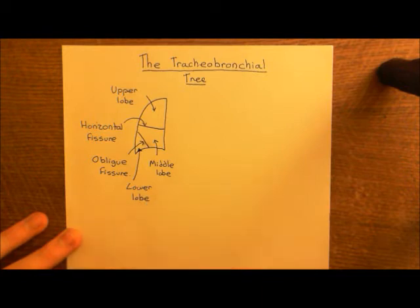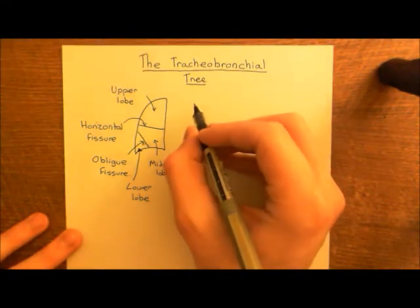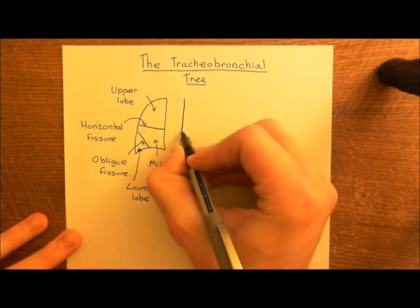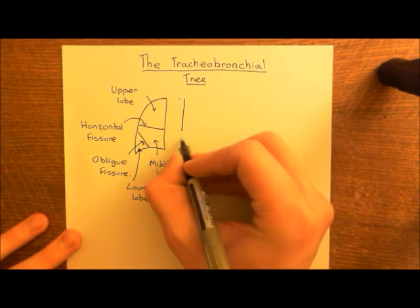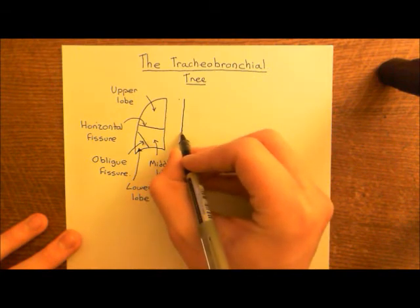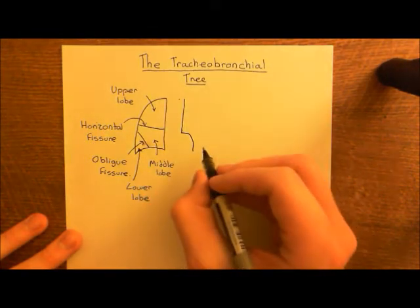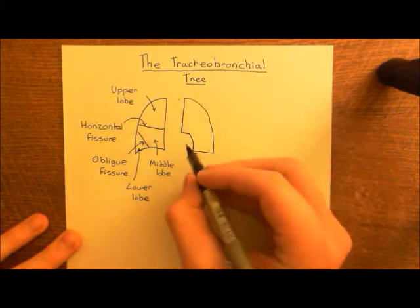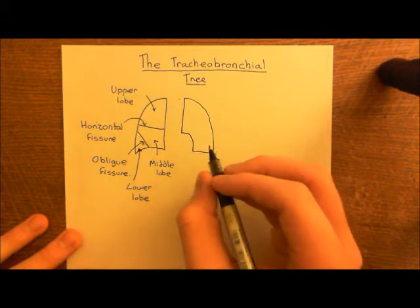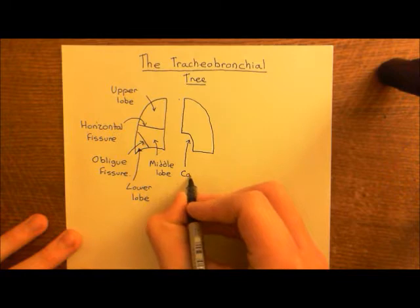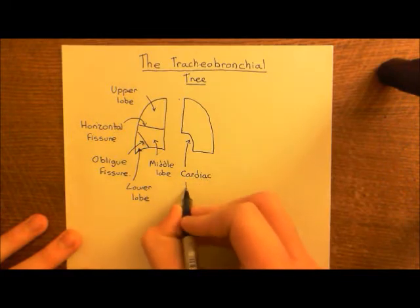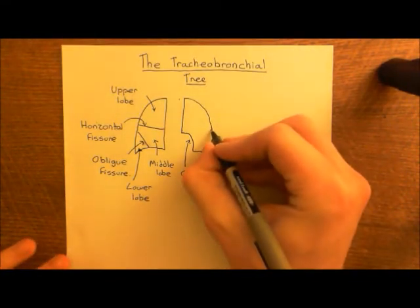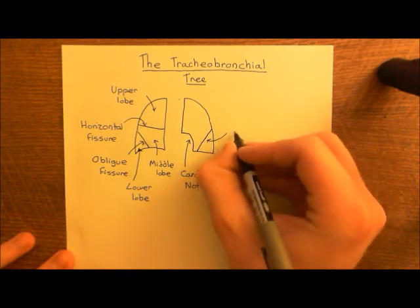Now we've done the right lung, let's move on to the left lung. The left lung is slightly different shaped from the right lung - it's got a notch basically where the heart is going to be. The lung has to come out a little bit to make space for where the heart is going to sit. So it's like the right lung but you've taken a sort of gouge out of it where the heart goes. Fittingly, this notch is known as the cardiac notch. The left lung also has a fissure - only one fissure - coming down like this, and this is known as the oblique fissure of the left lung.